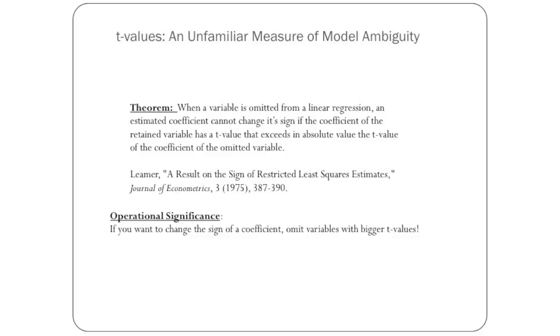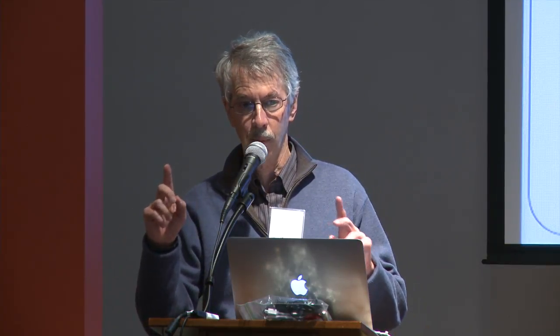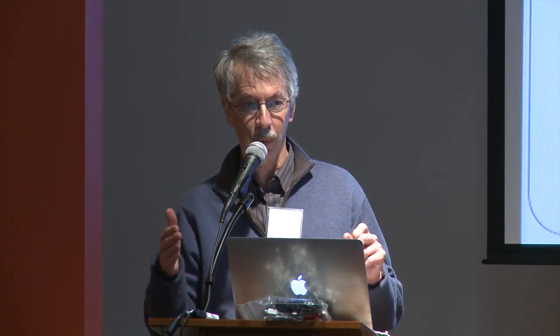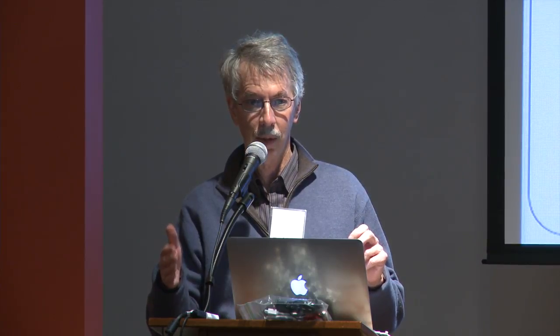I proved this long ago: if you don't like the sign of a coefficient in your regression, the way to change it is to omit a variable with a bigger T-value. If you omit a variable with a smaller T-value, you can't have a change in the sign of that coefficient. So the message is that T-values are somehow not only a measure of statistical uncertainty, but also model ambiguity — the coefficients with high T-values tend to be sturdy; you can't change their sign by omitting other variables. A big question is whether S-values and T-values are different, or whether T-values equal S-values but with a different interpretation, meaning you're still working with a sufficient statistic — the T-value — and using it for multiple purposes.